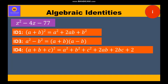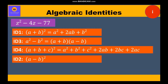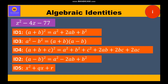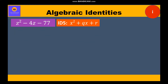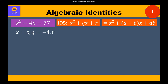We are left with identity 2 and identity 5. In identity 2, there is only one negative sign — with the -2ab term — and the b² term is always positive, so identity 2 is also ruled out. We are left with only identity 5, whose standard form is x² + qx + r. Here x is equal to z, q is equal to -4, and r is equal to -77.